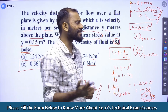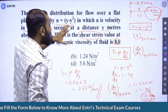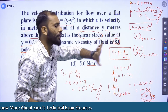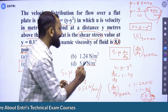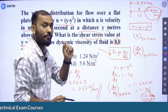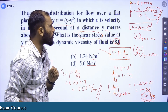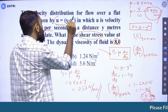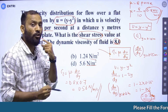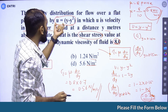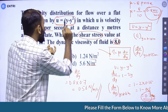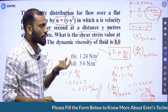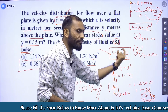Direct substitution using the equation tau = mu × (du/dy). This question involves a parabolic velocity profile: u = y minus y squared. So we differentiate to find du/dy. That is the key step before substituting into Newton's law.